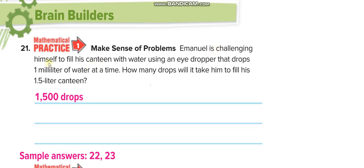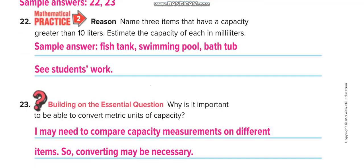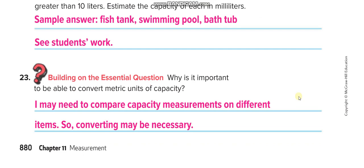The next problem: someone is challenging himself to fill a canteen using an eyedropper that drops 1 milliliter of water per drop. If she needs 1.5 liters to fill the canteen, she needs 1,500 drops. For the last question, you can write the suggested items or choose your own. Don't forget to like this video and subscribe to 'Learn Math with Mr. Sadh.' Send me your homework through Pioneer. Have a nice day, thank you!